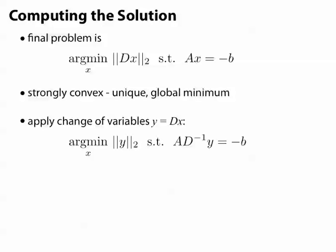But actually we can be a bit more clever here and apply a change of variables y equals Dx, and now we just end up with a problem that says, find the minimum 2-norm solution to an under-constrained linear system.